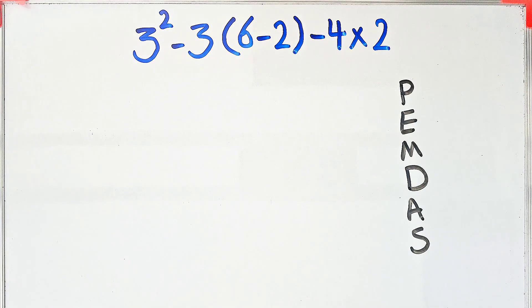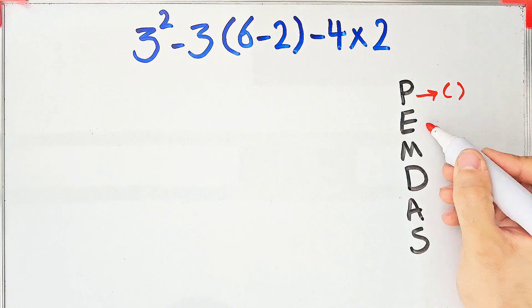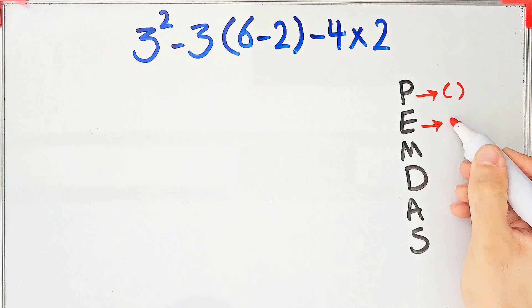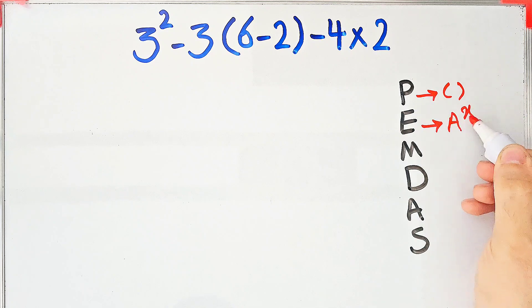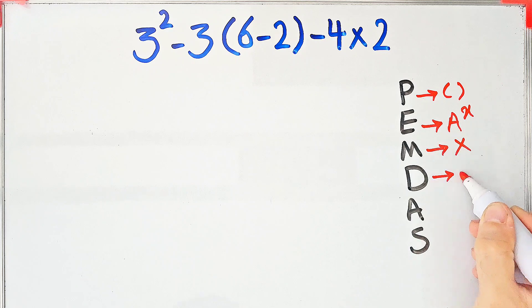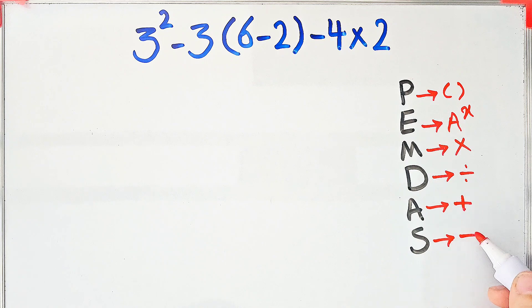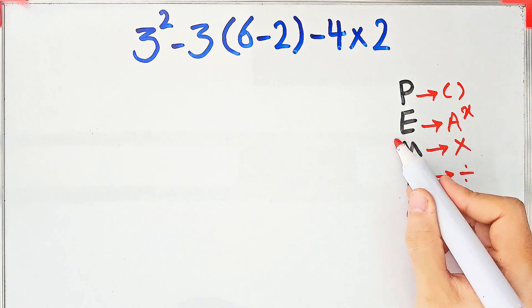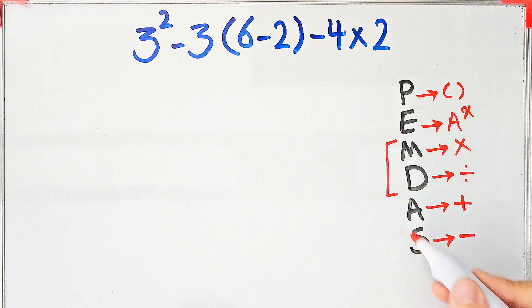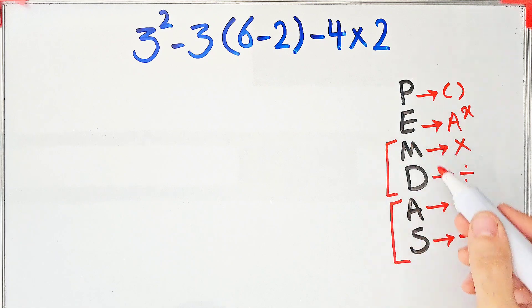In this rule: P stands for Parentheses, E stands for Exponent, M stands for Multiplication, D stands for Division, A stands for Addition, and S stands for Subtraction. Multiplication and division have the same level of priority, and when we have both in an expression we start from the left.